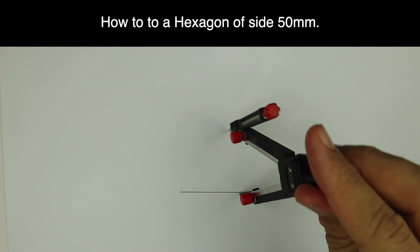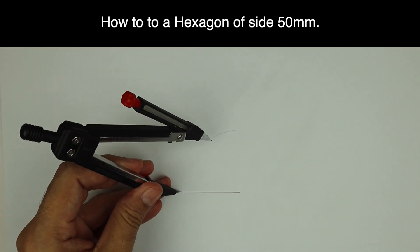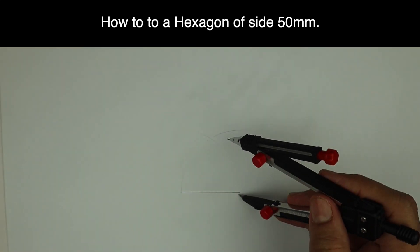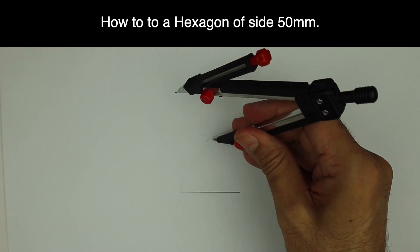From one end to another end, we'll draw an arc. Same way from the other side, we'll get a center.